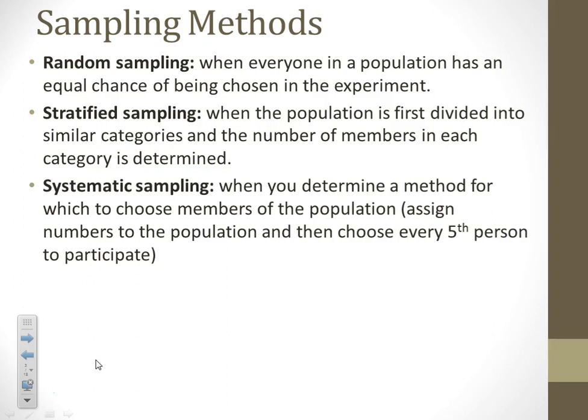Systematic: you assign numbers to everybody in the population and then choose like every fifth person. Or as people walk into school, you ask every third person that walks into the school. There's a system to it. So that's systematic. It's a little bit different than stratified.